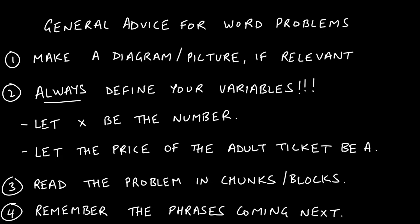Here's some general advice on solving word problems, because that's what we're going to start with. The first thing you should always be thinking of is to either make a picture or a diagram whenever relevant. The second piece of advice: always, always define your variables. So if you're looking for a number, start with 'let x be that number we're looking for.' If you're looking at the prices of movie tickets for adults versus children, define your variable for the adult ticket as 'a' and the child's ticket as 'c.' Pick relevant variables, but always define them. Don't just assume the reader is going to know what variables you're choosing and why.